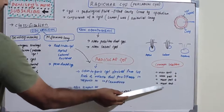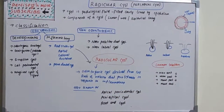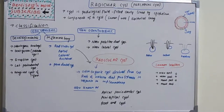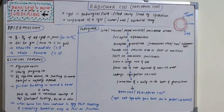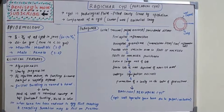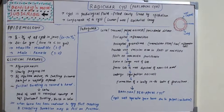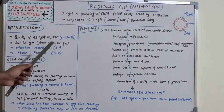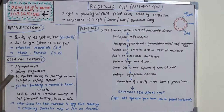The most common site is maxillary anterior and the least common is mandibular anterior. Regarding epidemiology, radicular cyst accounts for 60 to 70 percent of all jaw cysts. It is most commonly seen between 20 to 60 years and is very rare under 10 years. Maxilla is more affected because the porosity of maxillary bone is more favorable for cystic formation, with a three-to-one ratio compared to mandible. There is male predilection.